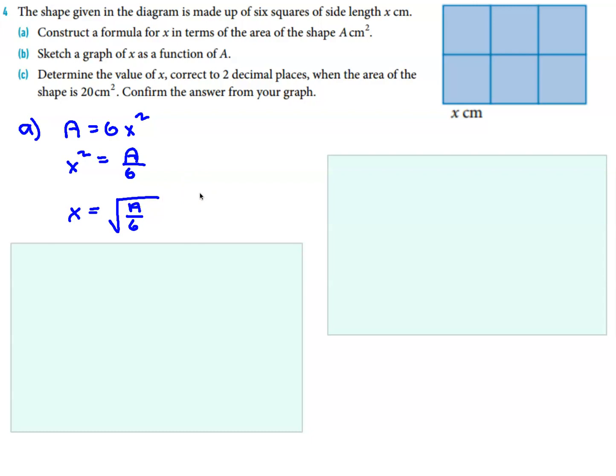So mathematically speaking, it should be plus or minus square root of A over 6, but practically speaking, it has to be the positive value. Okay, moving on from that.